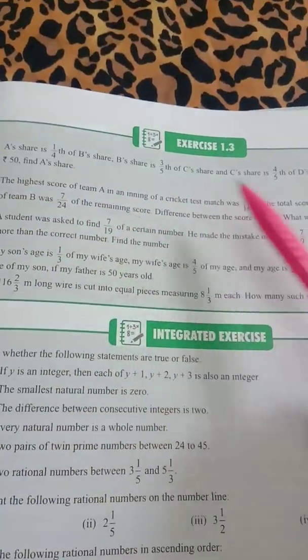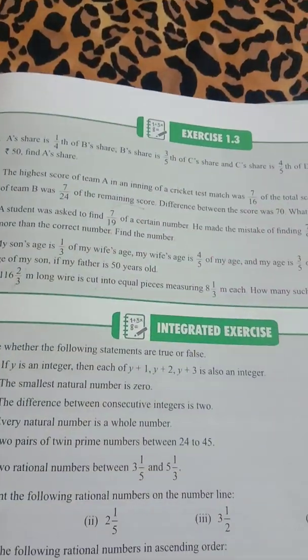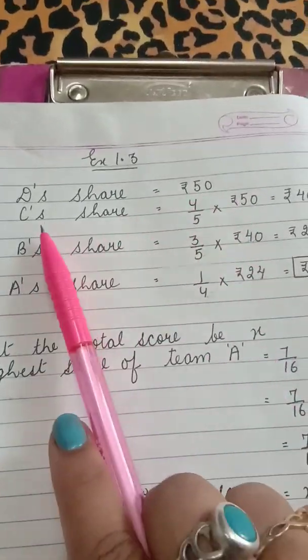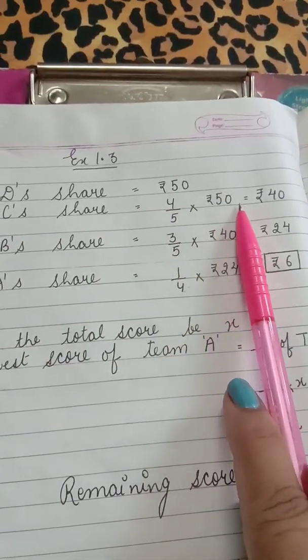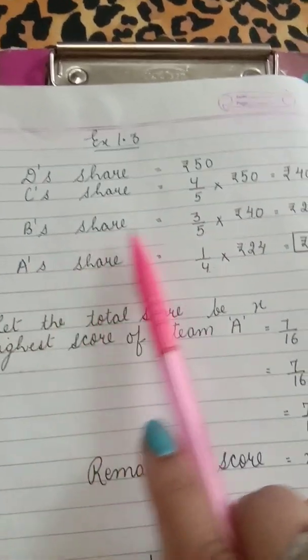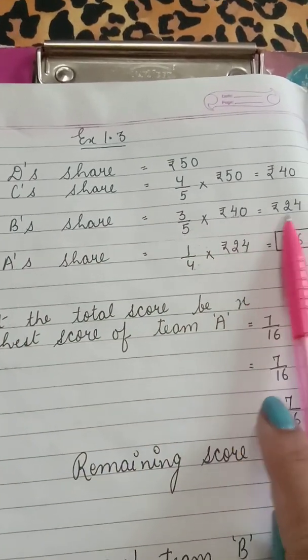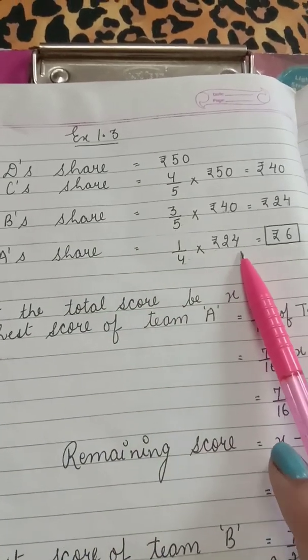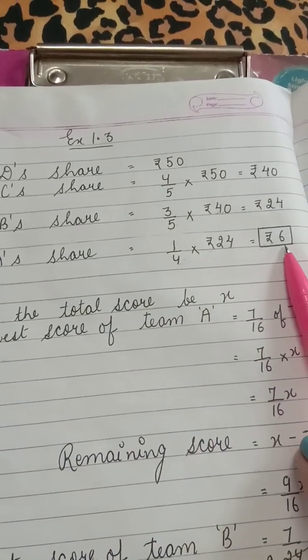So we have to go from back to front. Let's start the solution. Number 1: D's share 50 rupees, C's share 4 upon 5 of D's share, that's 40. B's share is 3 by 5 of C's share, that's 24. And A's share is 1 by 5 of B's share, which is Rs. 6.